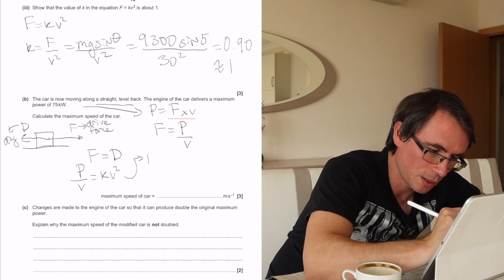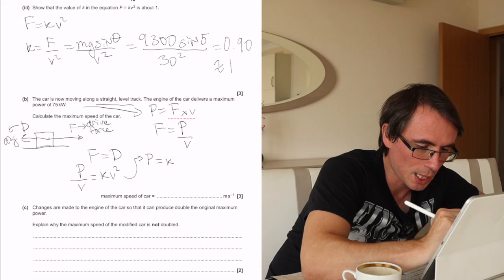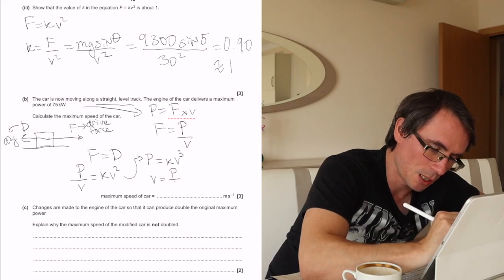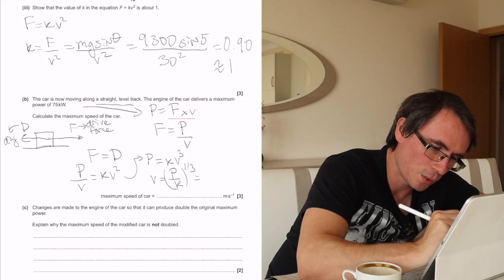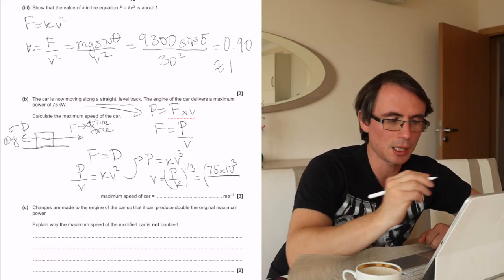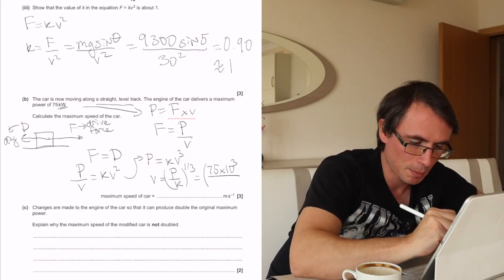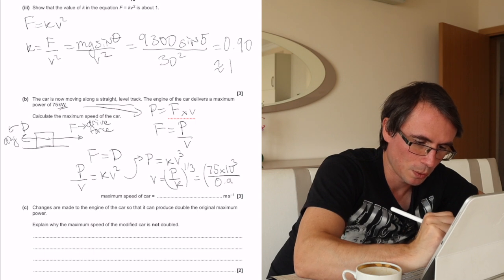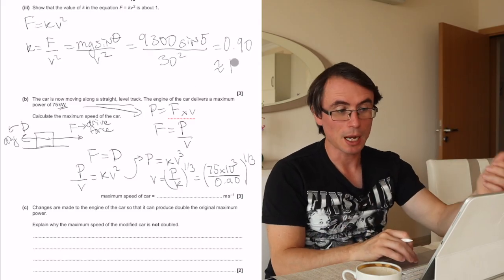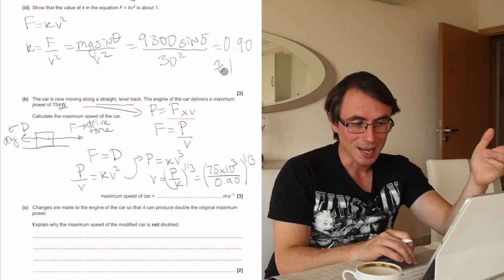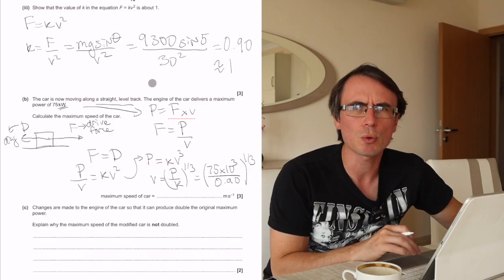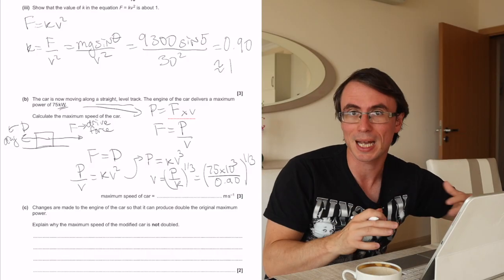I'm just going to carry on over here that the power is going to be equal to kV cubed. And finally, I can just rearrange for the maximum speed of the car, which is going to be P over k raised to the power of a third or cube rooted, which is going to be equal to 75 times 10 to the power of 3. Another hint: don't forget the actual units over here. Then I'm going to divide this by k, which was around 0.90 from the previous part. Just a little note that if I didn't know what k was, if I didn't calculate k, I can still use the value of 1 in this part of the question, and I would still likely get absolutely full marks. So if you cannot do a show question, use that value, assume that it's true, use that in the next question.